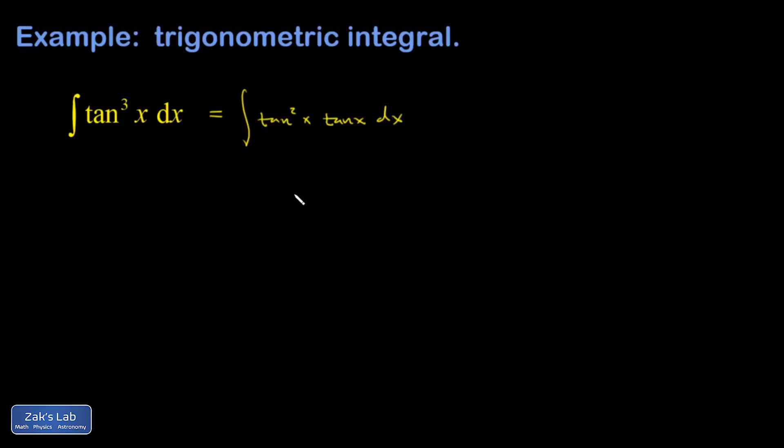And you probably start just seeing ahead by more steps the more you practice. But the identity I'm trying to exploit here is that tangent squared x plus 1 is secant squared x. And that means tangent squared is secant squared minus 1.